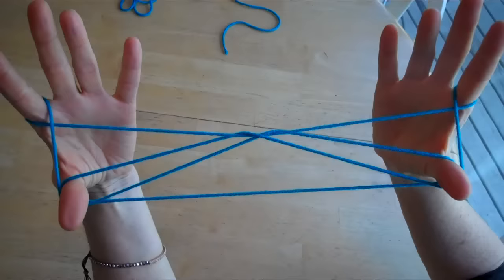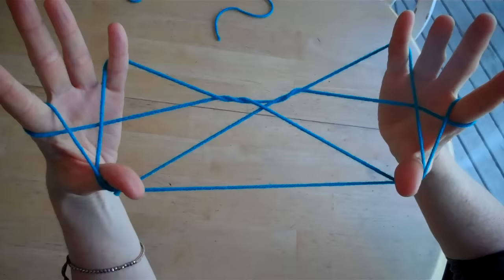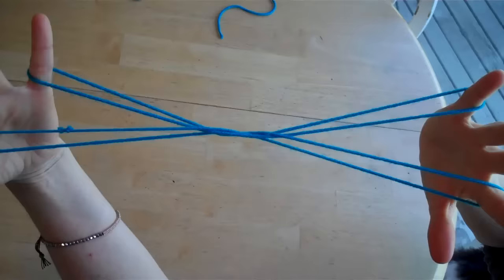With your pinky fingers, reach over the last string and pick up the next string. Now drop the thumb strings. Now you have what's called cat's whiskers.